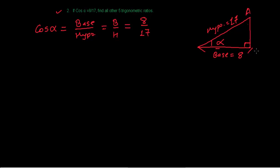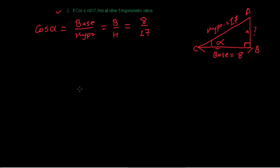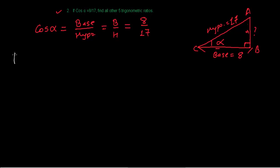Let me name this triangle ABC. Now we need to find the perpendicular — the side opposite to angle alpha. To do that, we use the Pythagoras theorem, which states that in any right angle triangle, the square of the hypotenuse equals the square of the perpendicular plus the square of the base.